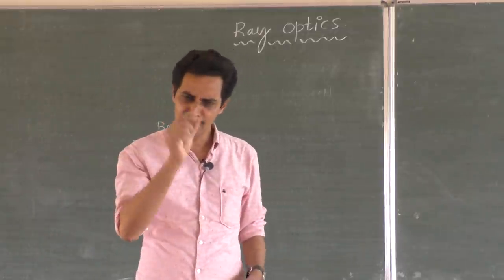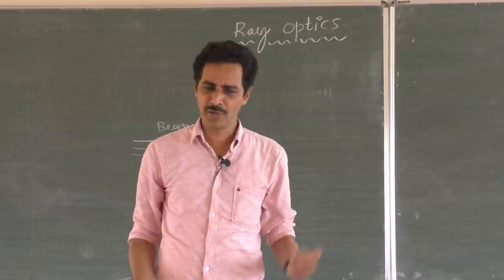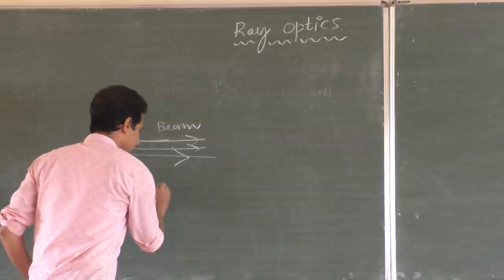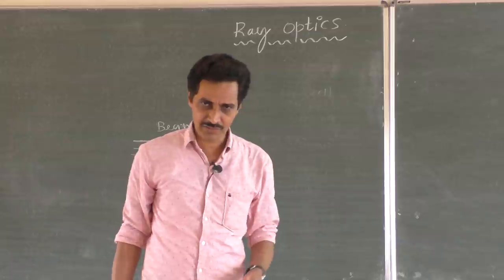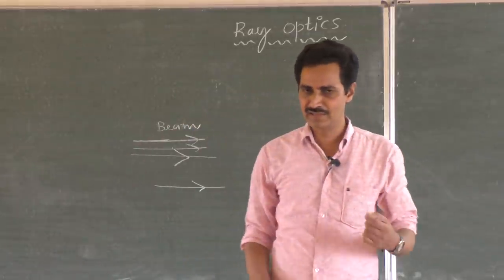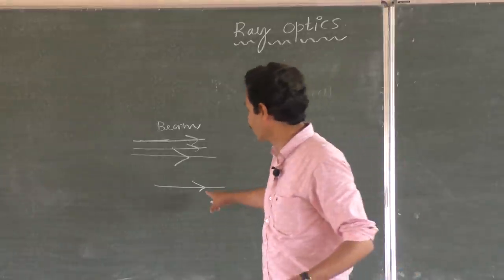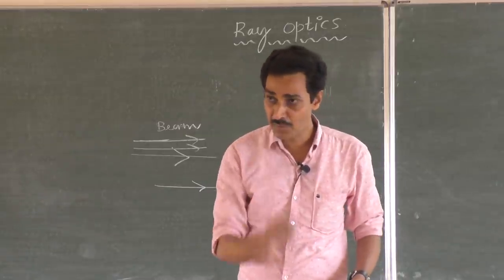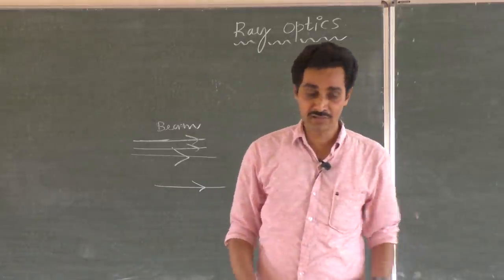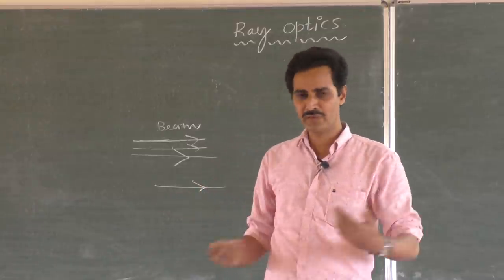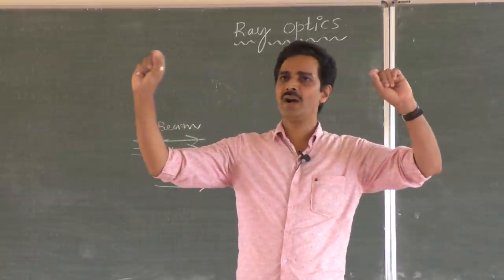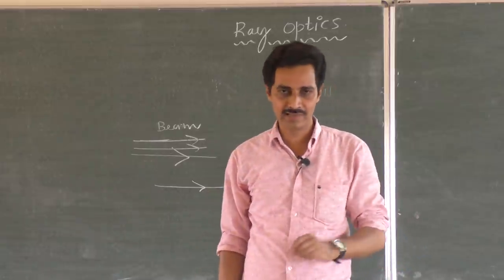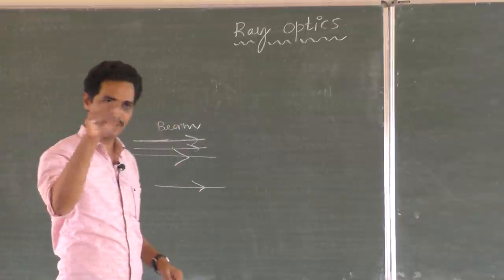Then what is a ray? A ray is a thin beam — as thin as possible, with no limit. Take a thin ray of light: if you ask a student whether it is a thin ray, yes. But if you ask an ant, it would say this is very thick and it's a beam. So a straight-line path of light represented by an arrow is called a ray. Ray is the path of light represented in a diagram.